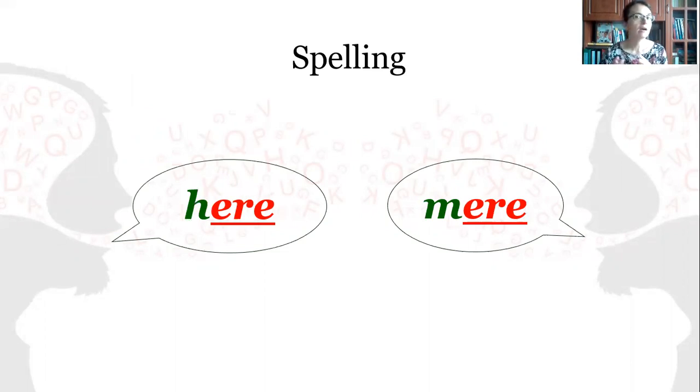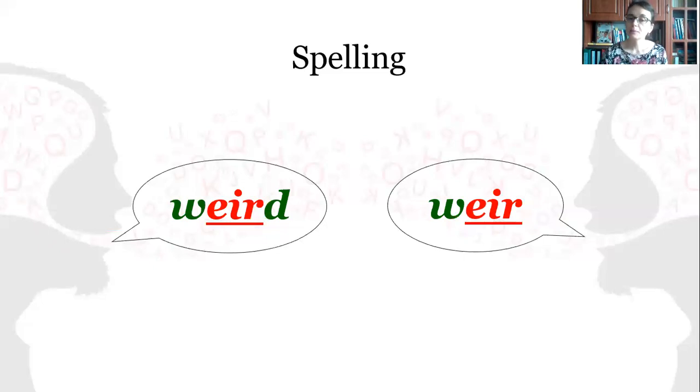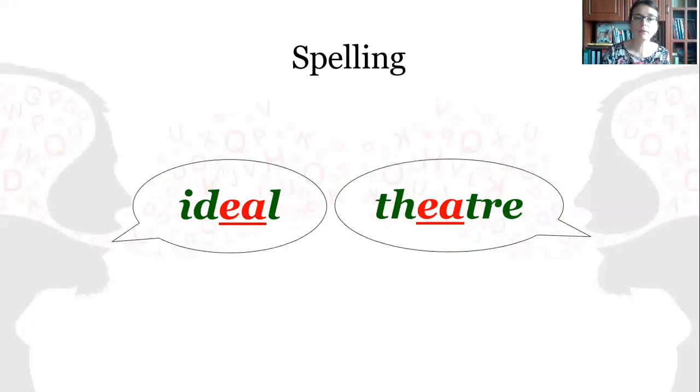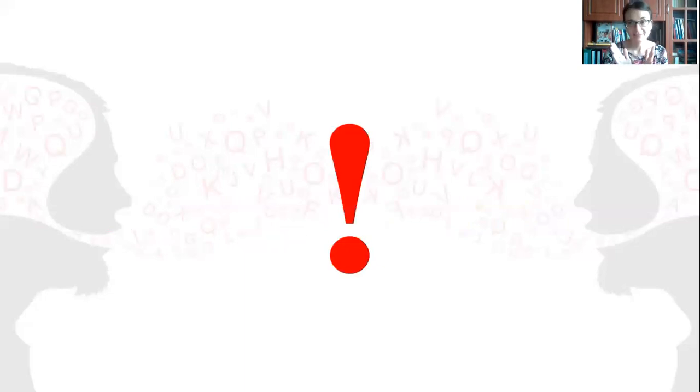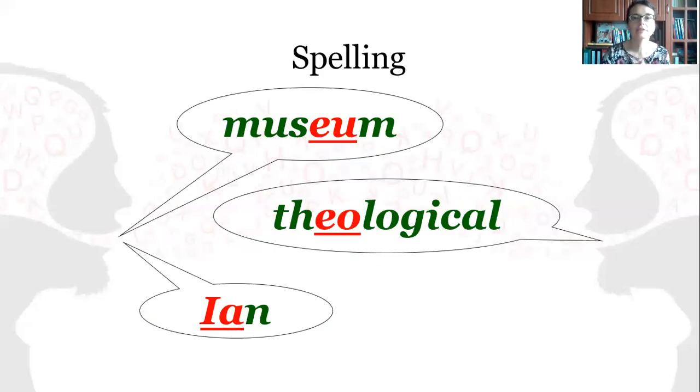With the help of E-R-E as in here, mere, with the help of E-I-R as in weird, weir, with the help of E-A as in ideal, theater. And let's see what are the exceptional cases: museum, theological, Ian.